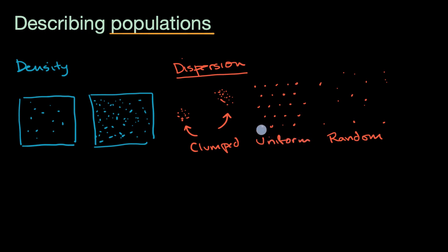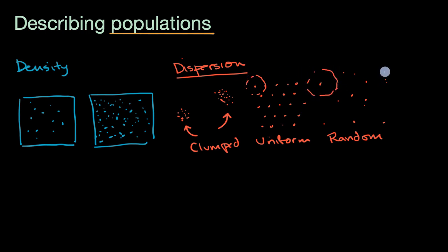A uniform distribution maximizes how much space each member of the population gets — just enough space, but not too much. There might be reasons for individual or population survival where it makes sense to spread out in a uniform way.